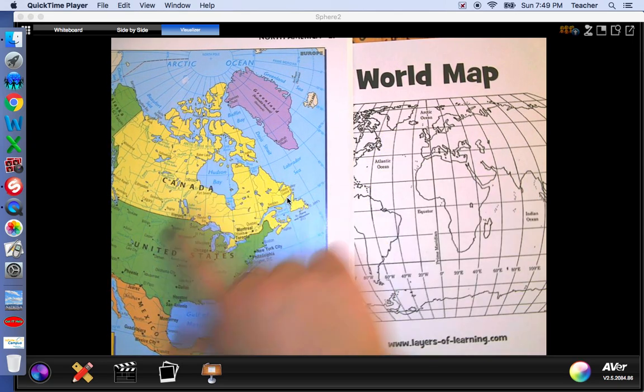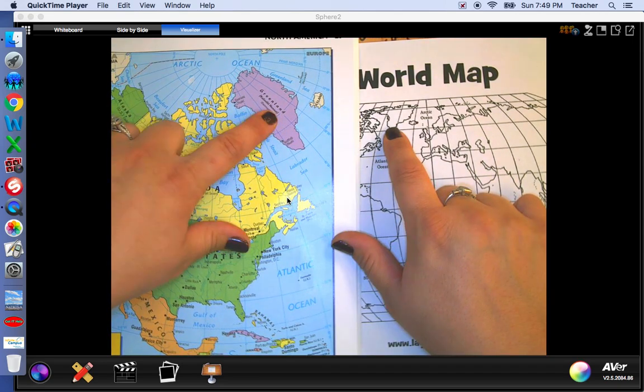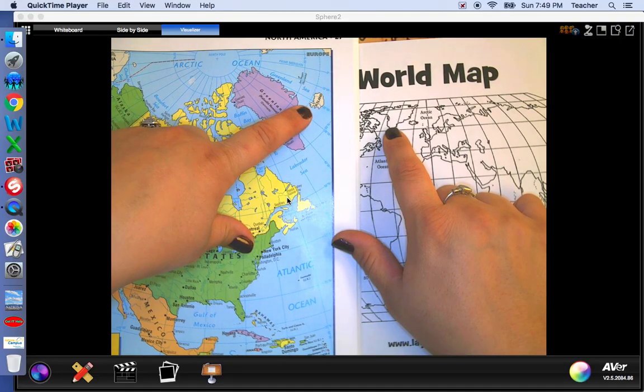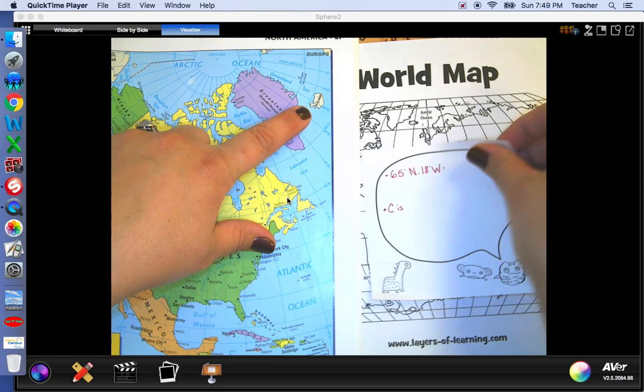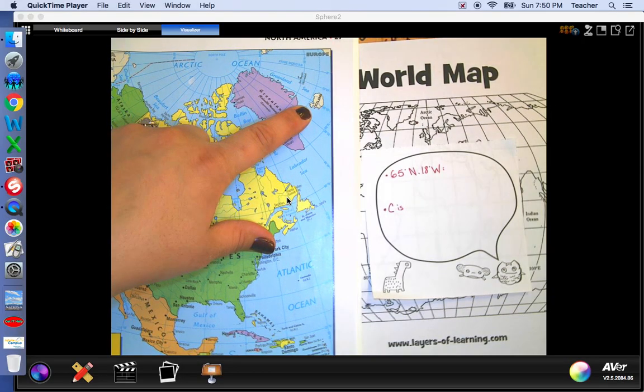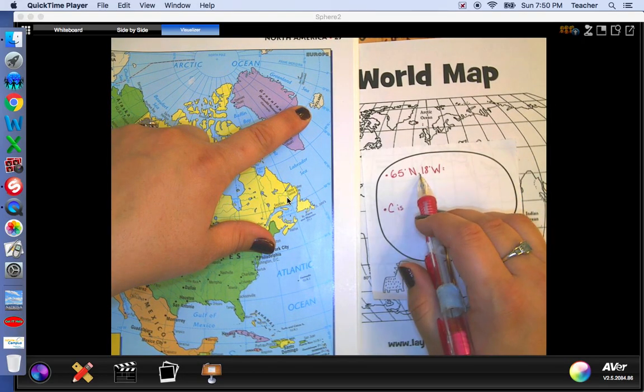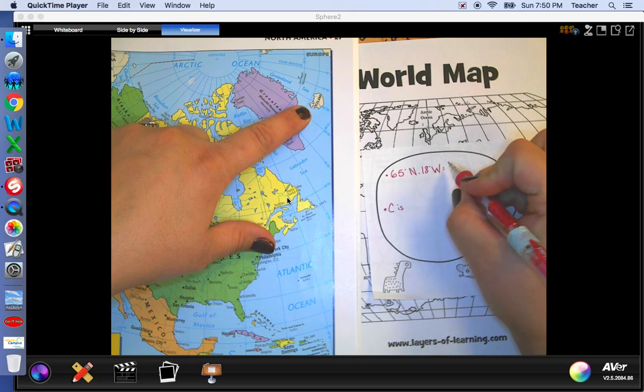So while looking at the map, I've identified the larger area as Greenland. And then right there, labeled is the little island called Iceland. So I've discovered that 65 degrees north and 18 degrees west is Iceland.